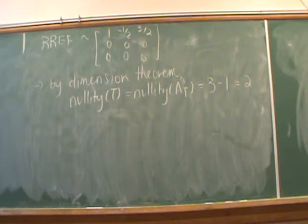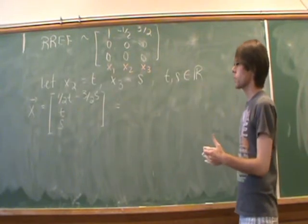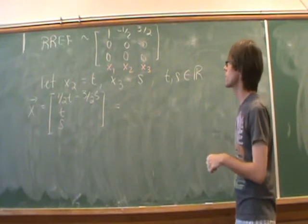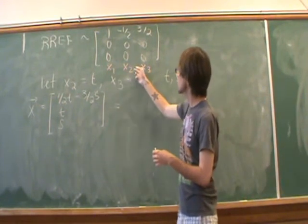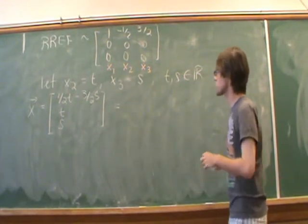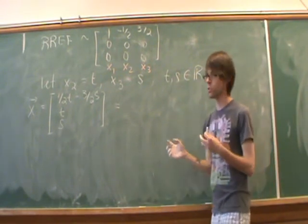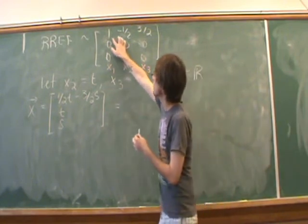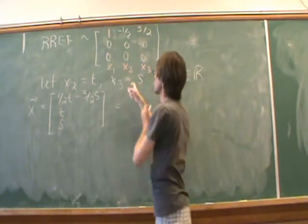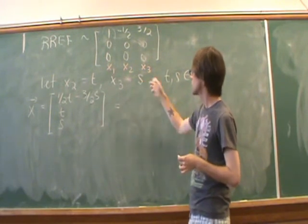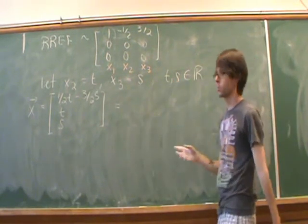Once we know the rank, we can quickly calculate the nullity of our linear transformation using the dimension theorem. To figure out the kernel, I'll label each column as x1, x2, x3. We already know we should have two parameters because our nullity equals 2. We only have the one leading one, so x2 is set equal to t and x3 is set equal to s, where t and s are real numbers.